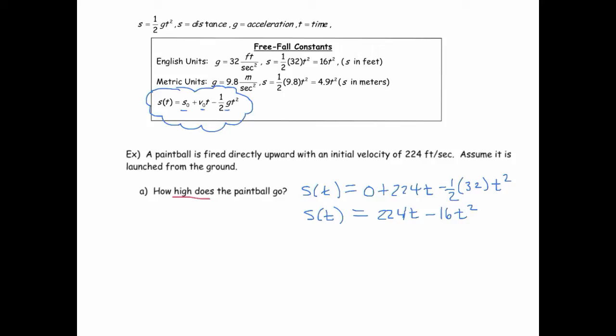Since velocity is the derivative of position, then we know our velocity function is going to be 224 minus 32t using our differentiation rules there. And so now I'm just going to set this equal to 0 and solve for the time. So that must mean that 224 equals 32t. And dividing by 32, it looks like we get that this is all going to happen when t is equal to 7.